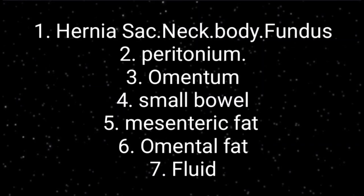Hernias are composed of a sac, the parts of which are described as the neck, the body, and the fundus. The inguinal hernial sac consists mainly of peritoneum, which protrudes through the abdominal defect — also called the hernial orifice — and envelops the internal hernial contents. The neck of the sac is situated at the defect and is very important because hernias with a narrow or rigid neck are most likely to obstruct and strangulate.